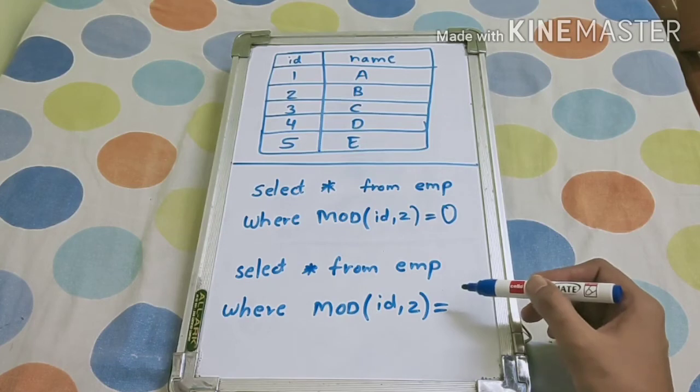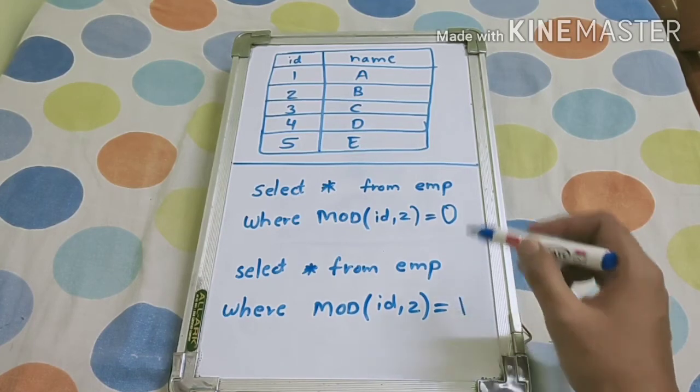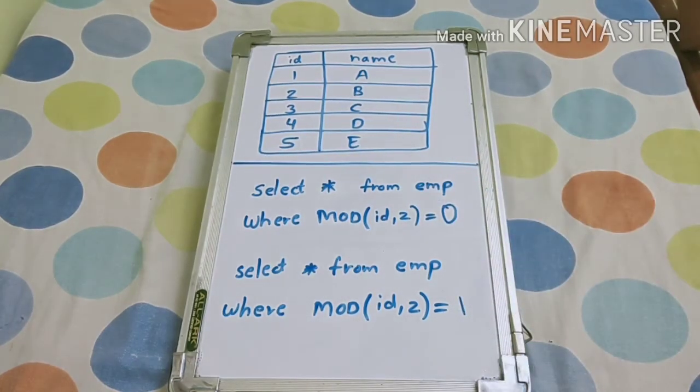And for odd, you have to write mod of ID comma 2 equal to 1. So what the mod function does is it gets the remainder after dividing the number by 2.